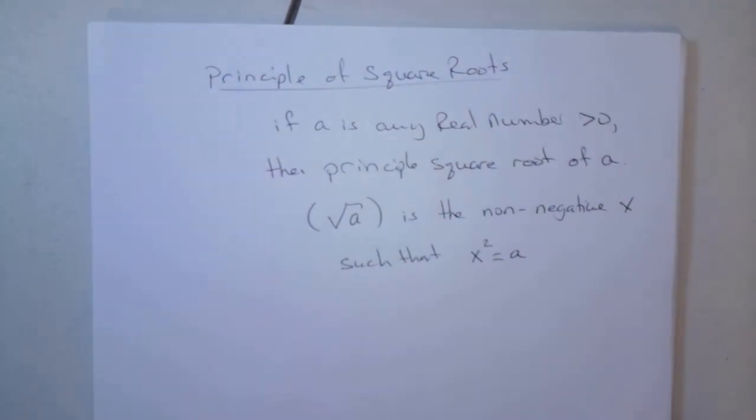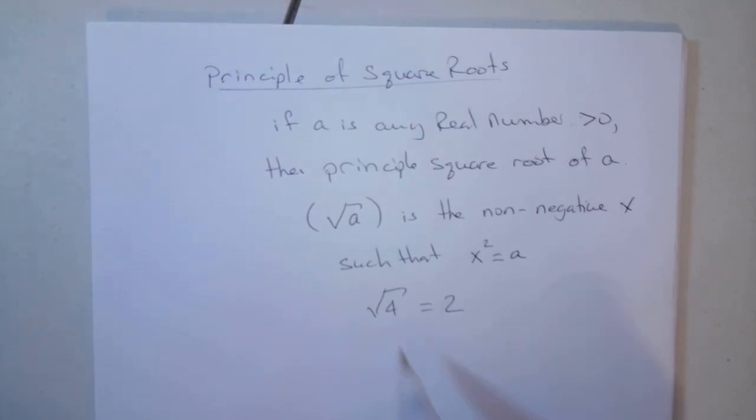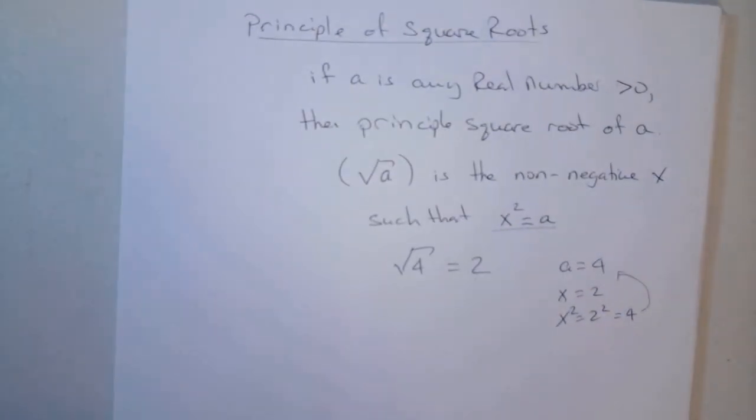That's the formal definition we just talked about. Square root of 4 equals 2. 4 is a. x is 2. If I square x, I get 4, which is the same thing as a, and that's what that says. So that's the stuff we've been doing all along.